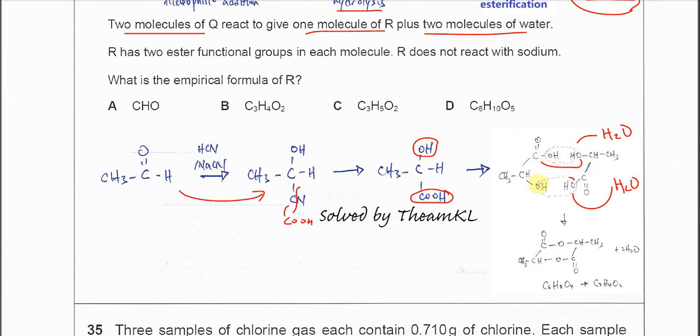This new bonding forms, and this one also, a new bonding is formed. Then it will form this cyclic diester, removing two water molecules.